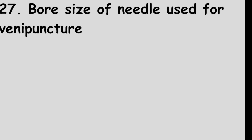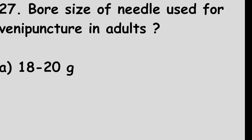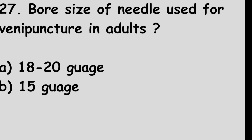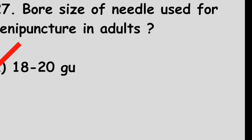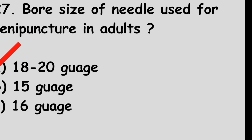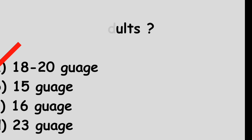Question number 27: Bore size of needle used for venipuncture in adults. Option A: 18–20 gauge. Option B: 15 gauge. Option C: 16 gauge. Option D: 23 gauge. The right answer is option A, 18–20 gauge. Greater the gauge size, lesser will be the diameter.